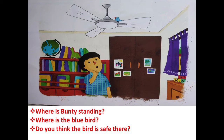Look at the picture carefully, children. The first question: what is Bantu pointing at? His hand is up and everybody's looking up — where is he pointing? The next question: is the bird still there? Now moving to the next question: what are the children doing?